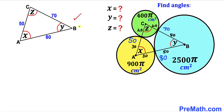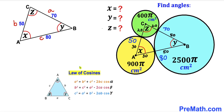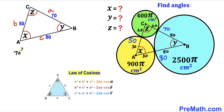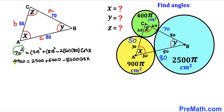In triangle ABC, vertex A is opposite side a (length 70), vertex B is opposite side b (length 50), and vertex C is opposite side c (length 80). The angle at A is X. Recalling the Law of Cosines, we use: a² = b² + c² − 2bc·cos(A). So we write 70² = 50² + 80² − 2 × 50 × 80 × cos(X).